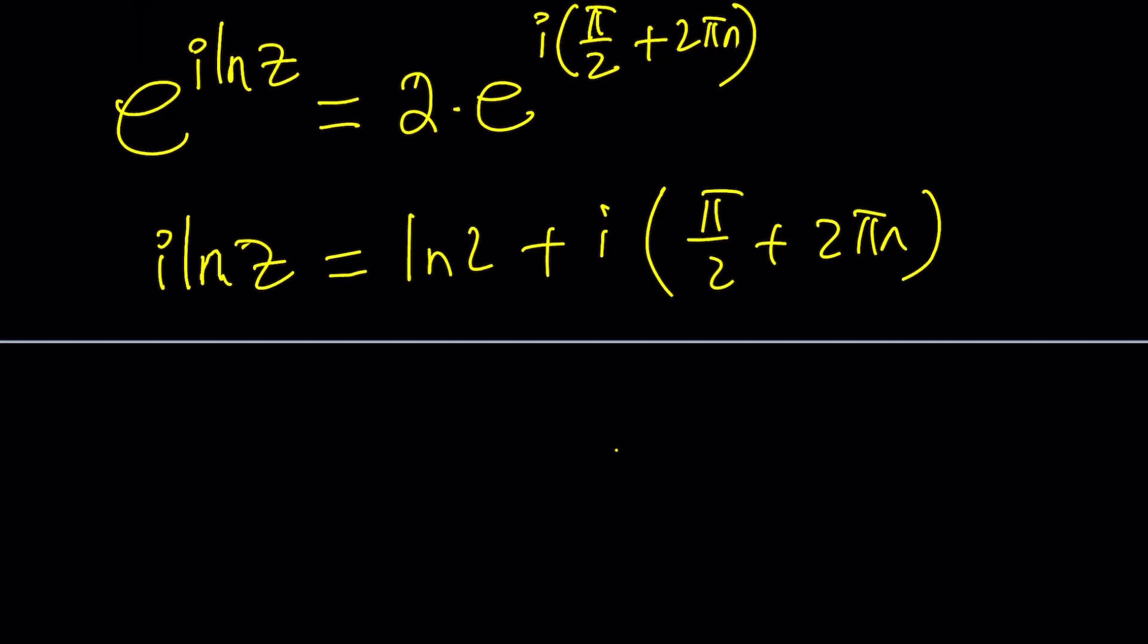We're about to get LNZ from here. Let's multiply by negative I or divide by I, whichever you prefer. I like multiplication. Negative I is going to give us this, and negative I is going to give us negative I squared, which is positive 1. So we're going to get pi over 2 plus 2 pi N.